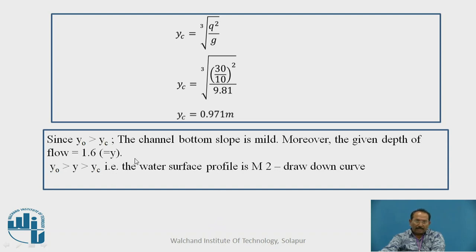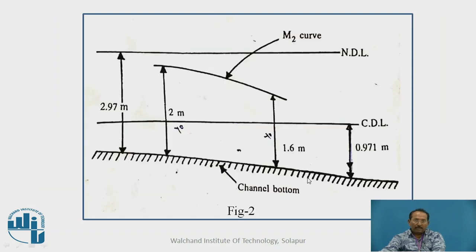Since normal depth is greater than critical depth, it is a mild surface profile and y0, that is normal depth is greater than actual depth and which is greater than critical depth. This is a M2 type of profile, we can say it is a drawdown curve. See here, 2.97 is greater than 2, which is greater than 1.6.